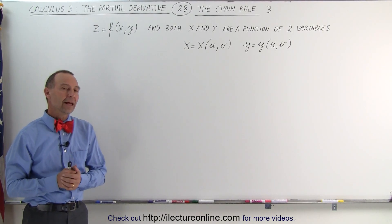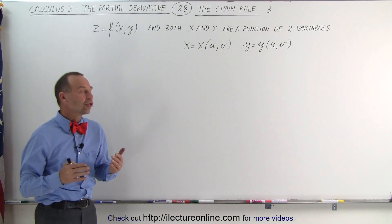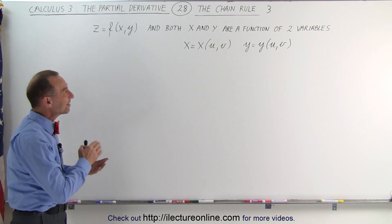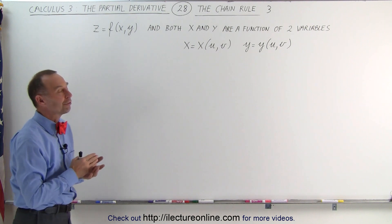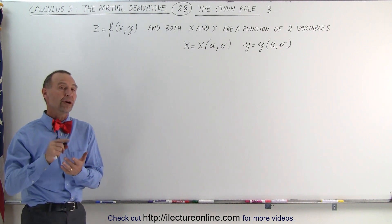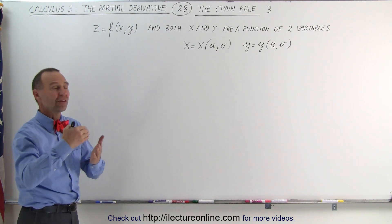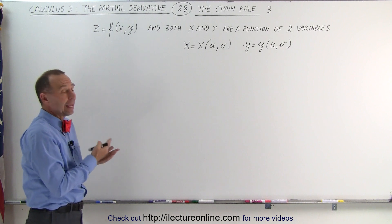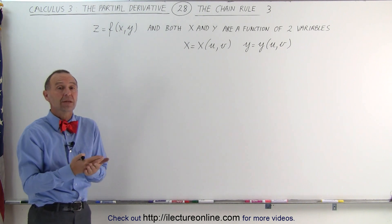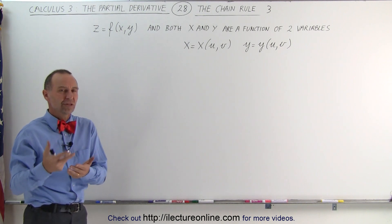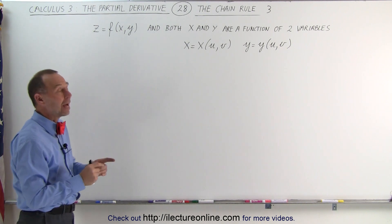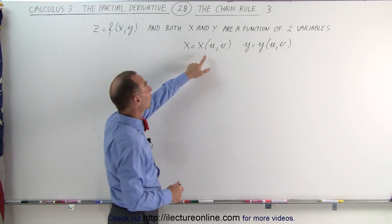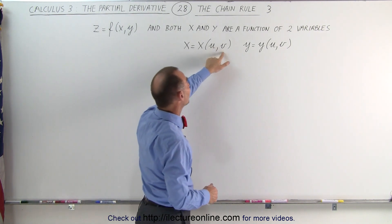Welcome to our lecture online. Now let's take a look at the chain rule where both x and y are a function of two variables instead of one variable. In previous examples we had x and y being a function of t or a function of theta, but now x and y are a function of two variables u and v.